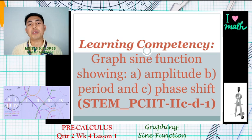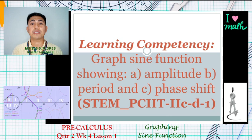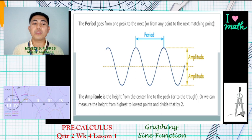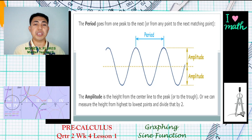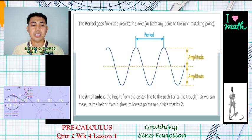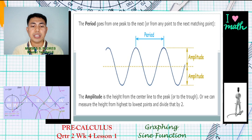Our learning competency is to be able to graph the sine function showing the amplitude, the period, and of course the phase shift. Let's define some terms. Period means going from one peak to the next, or from any point to the next matching point. To determine the period, we use the formula 2π over b. If the absolute value of b is less than 1, the graph is stretched horizontally.